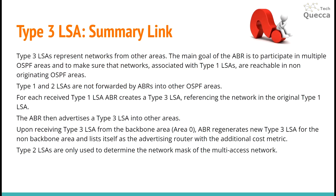Type 3 LSAs represent networks from other areas. The main goal of the Area Border Router is to participate in multiple OSPF areas and to make sure that networks associated with Type 1 LSAs are reachable in non-originating OSPF areas. Type 1 and Type 2 LSAs are not forwarded by ABRs into other OSPF areas. For each received Type 1 LSA, an ABR creates a Type 3 LSA referencing the network in the original Type 1 LSA.